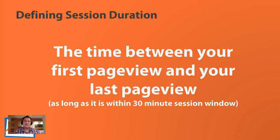Session duration — which is also called time on site — is the time between the first page view of a session and the last page view, within that 30-minute session window. For example, if Jeff came to a website at noon, viewed another page at 12:05, another at 12:10, and one at 12:15, the session duration would be 15 minutes. If you land on the last page and keep your browser open, it won't count as a long session — it will actually count as two different sessions.